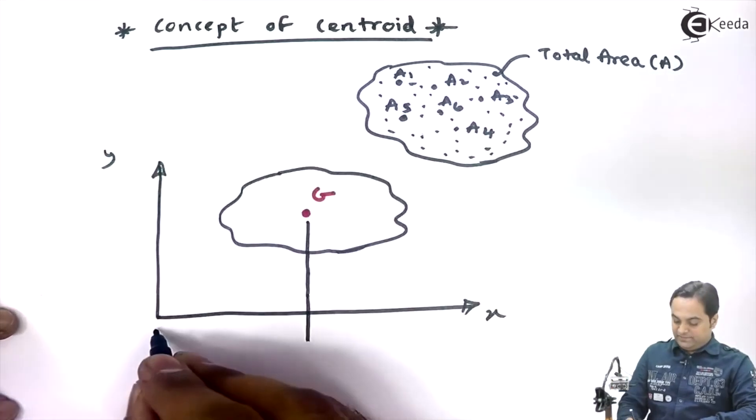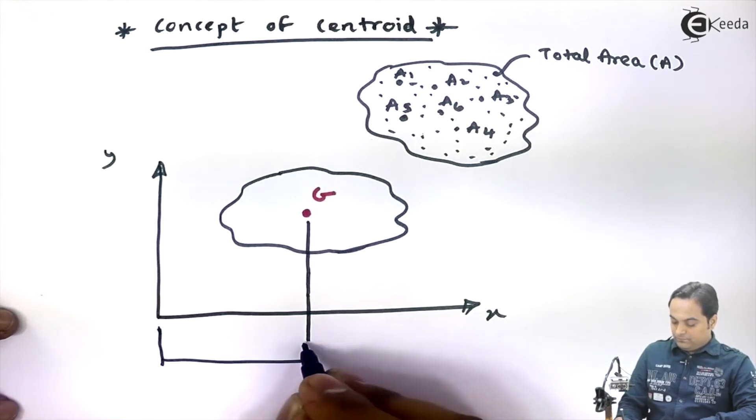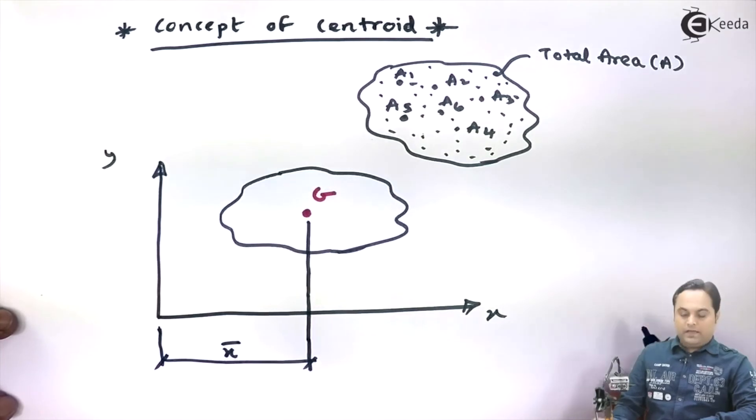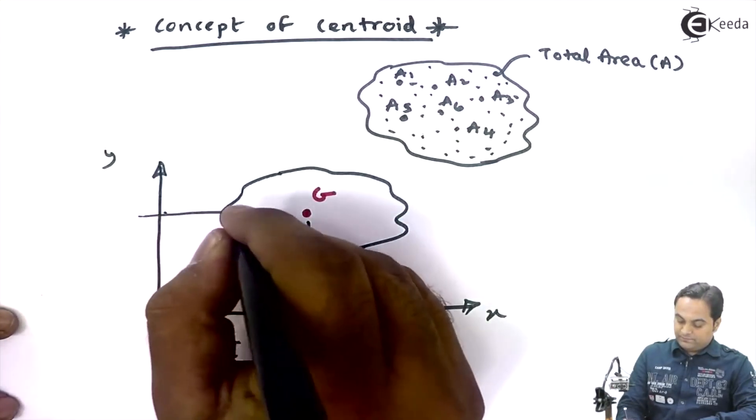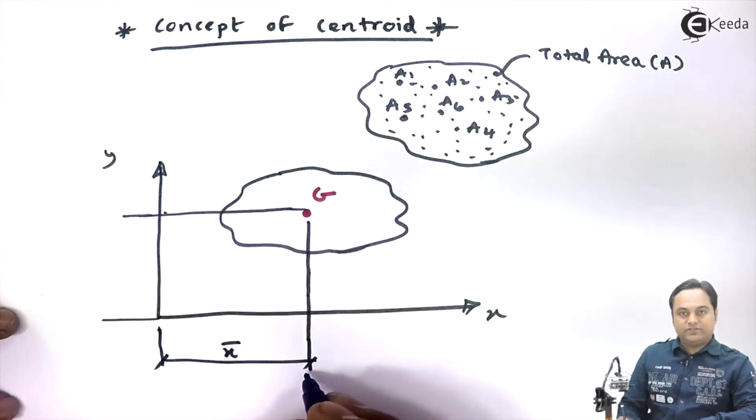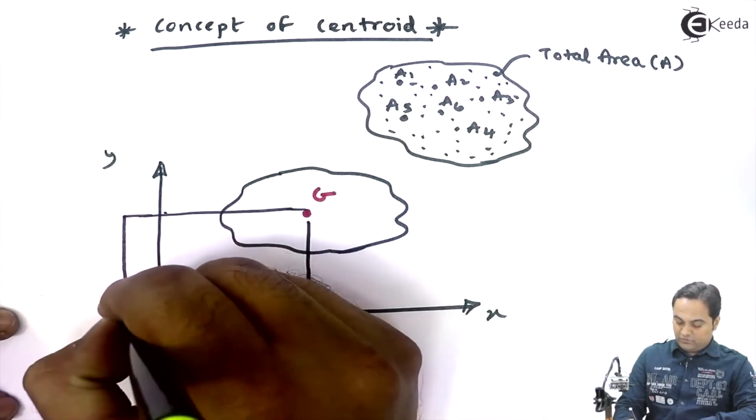If I draw this figure again, instead of showing individual areas I would be showing the total area by one particular point and that point becomes centroid. Centroid is denoted by letter G. And the location of the centroid with respect to y-axis, it is X bar.